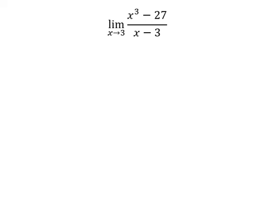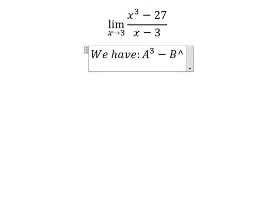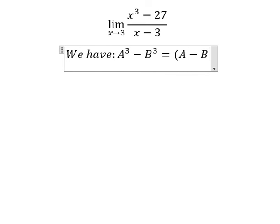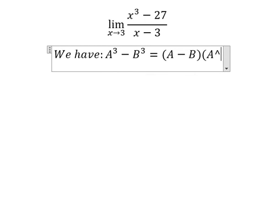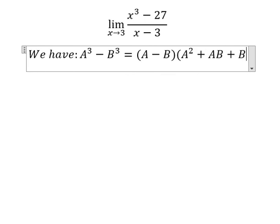Hello everybody, so today I want to talk about calculus. The topic today is about limits. Now I want to show you how to answer this problem. We have the formula here: A to the power of 3 minus B to the power of 3 equals A minus B multiplied by A squared plus AB plus B squared.